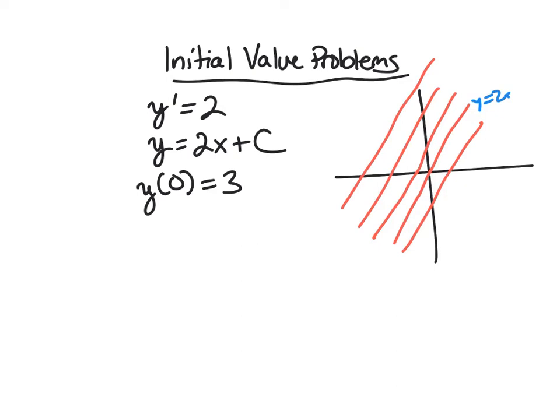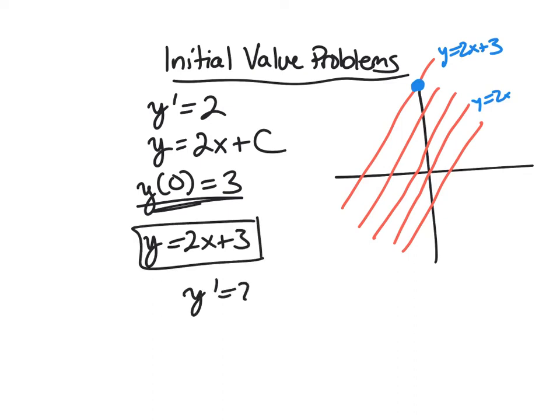And so if I have just this last point, I know (0, 3) is a point on my graph, then I'm specifically on the line y = 2x + 3. And so if I have this initial condition, I know exactly which solution I care about. And so this would be a solution to the initial value problem where y' = 2 and y(0) = 3.